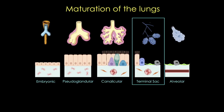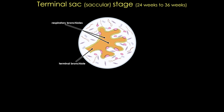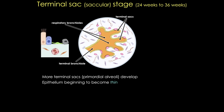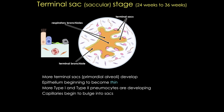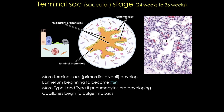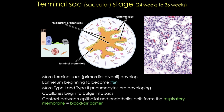Now let's move on to the terminal sac, or saccular stage. During this stage, many more airspaces become subdivided to form terminal sacs, or saccules. These saccules are increasingly lined by flattened epithelium composed of type 1 pneumocytes and type 2 pneumocytes that produce surfactant. Capillaries are beginning to bulge into these sacs, as you can see in this histological image. It's this contact between the type 1 pneumocytes and the endothelial cells of those capillaries that establishes the blood-air barrier, permitting adequate gas exchange for survival of the fetus if born prematurely.